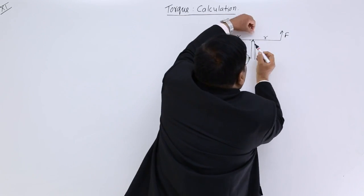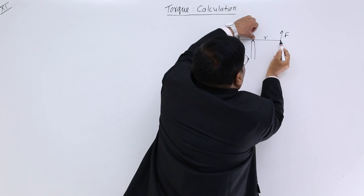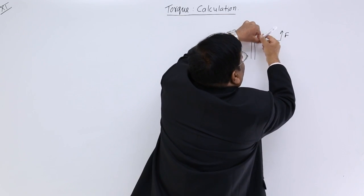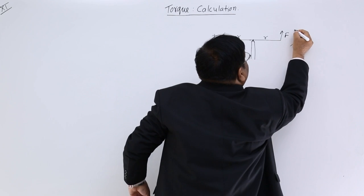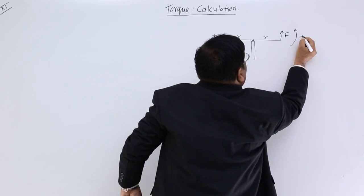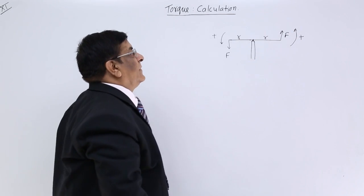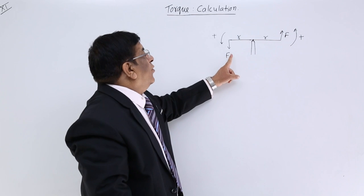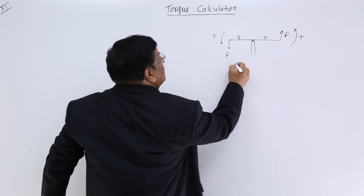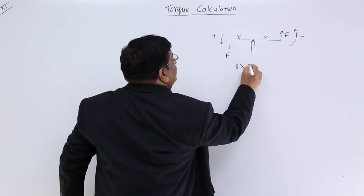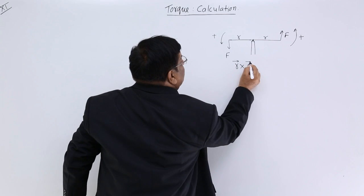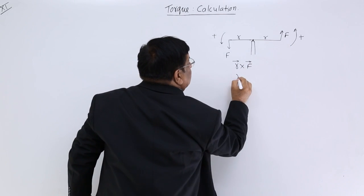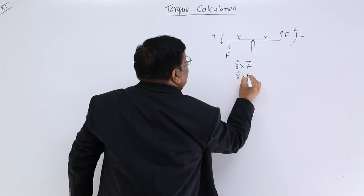So this is anticlockwise, which we call positive. This other force and its arm — if you see this, it is also moving anticlockwise, so this is also positive. How much is the moment of this force? R cross F. This is the moment of this force. How much is the moment of this force? R cross F.